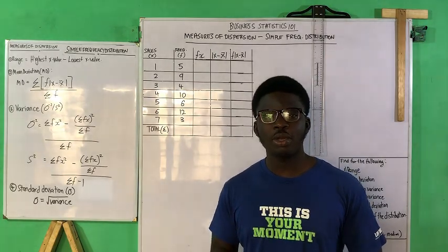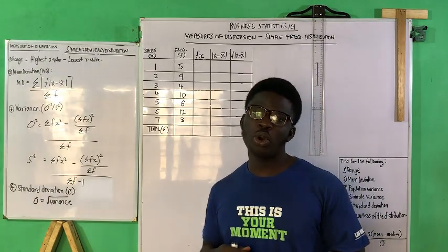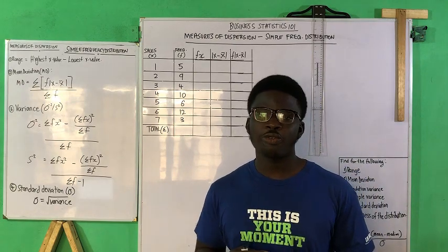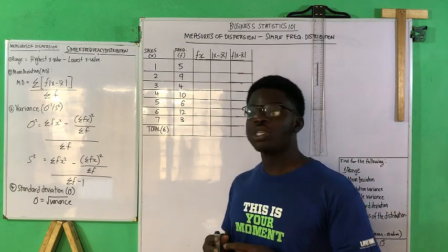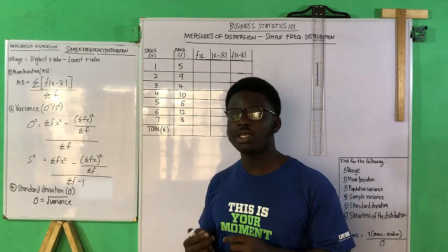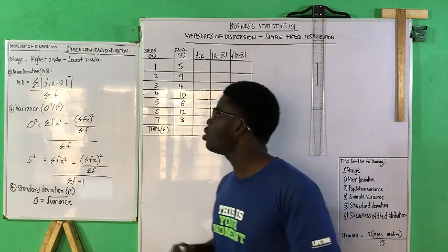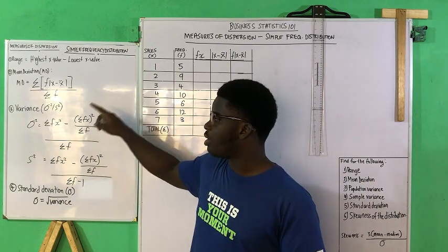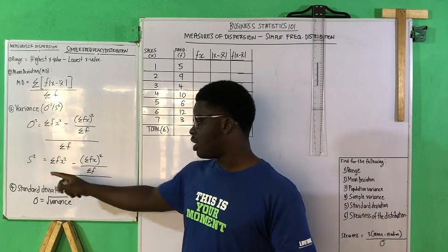Hello, welcome to THV Tutorials. This is Business Stats 101 and this is the practical video for measures of dispersion. In the theory video we discussed measures of dispersion — how you measure dispersion or how spread out data is in a distribution. We talked about concepts like the range, the mean deviation, the variance — where you had the population variance and the sample variance — and then the standard deviation.